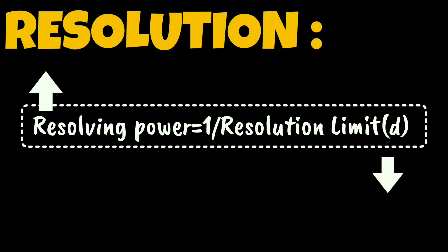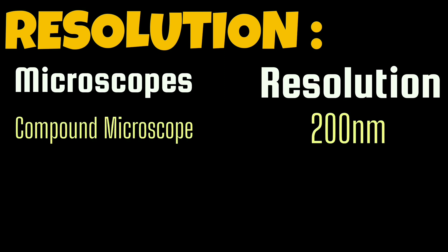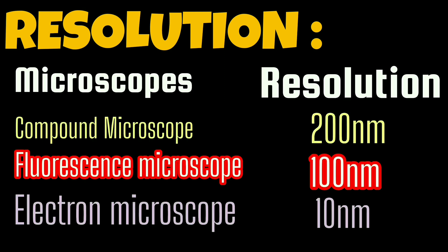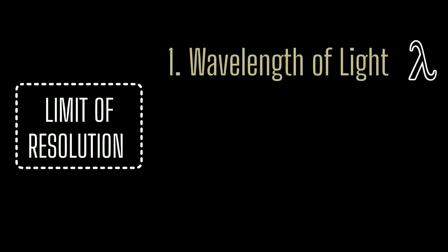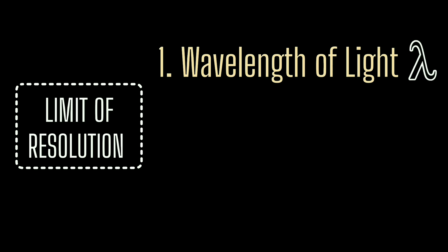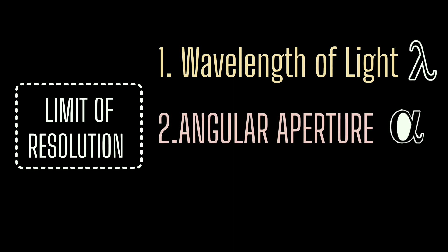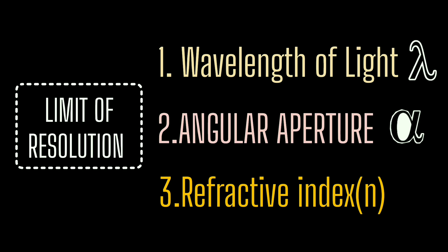We can write it like this: resolving power equals 1 divided by d, where d denotes the resolution limit. These are the microscopic resolutions of different types of microscopes. The electron microscope has the least resolution limit, thus providing the best resolution. The limit of resolution depends upon three factors: first, the wavelength of light used to illuminate the specimen; second, the angular aperture; and finally, the refractive index of the medium surrounding the specimen. The effect of these three variables on the limit of resolution is described by the Abbe equation.